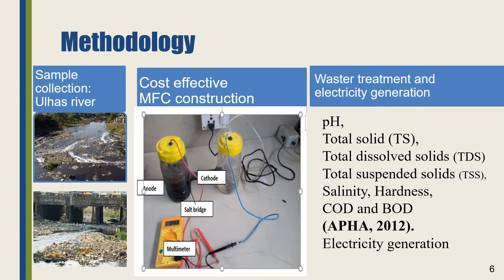Methodology. The sample collection was carried out from Ullas River from Thane district, Maharashtra. You can clearly see the health of this particular river, as it is receiving polluted water from many small industries. This polluted water is playing an important role in affecting the quality and the aquatic life associated with this river. Hence, the wastewater was collected and analyzed for its pollution level with respect to total solids, dissolved solids, and suspended solids.